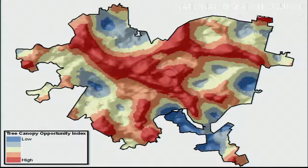We can do these sorts of strategic assessments. This is what we call the tree canopy opportunity index — a heat map that identifies areas in the city where you've got lots of land available to plant trees and also low amounts of existing tree canopy. Once again, we don't want to oversell this technology. We're just saying as you begin to prioritize your efforts, these are factors that you need to take into consideration.